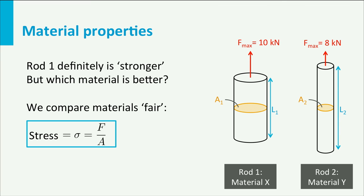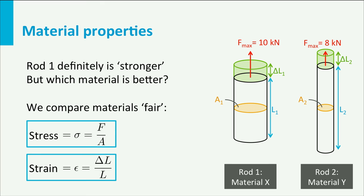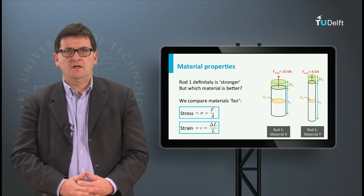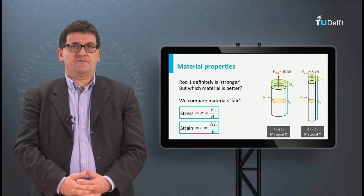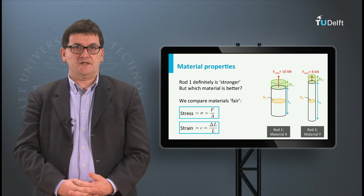The symbol for stress is the Greek letter sigma. Note that the cross-section is perpendicular to the working line of the force. Another important property is the strain, which tells something about the elongation of the material due to loading. In this case we normalize for the length by dividing the change in length by the original length. The symbol for strain is the Greek letter epsilon. Both stress and strain are very often used in discussions about mechanical properties of materials.